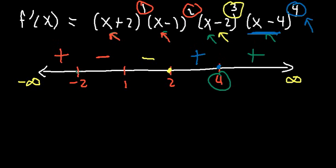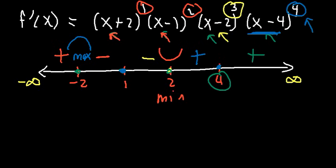All of these points — negative 2, 1, 2, and 4 — are critical points because the first derivative is 0 there. At negative 2, the sign switches from positive to negative — that's a local max. At 1 and 4 the sign doesn't change, so they are saddle points. At 2, it changes from negative to positive — that's a local minimum. Only at negative 2 and 2 is there a sign change, giving us our local extrema.